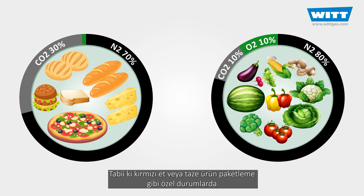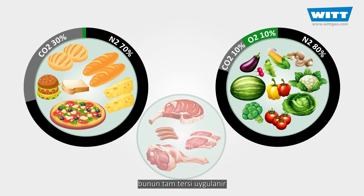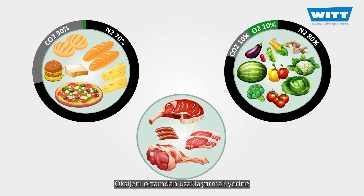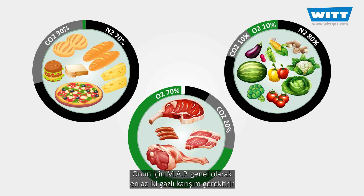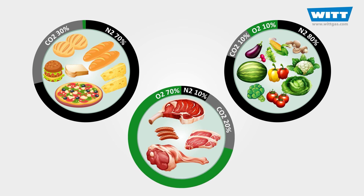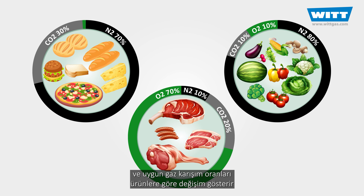Of course in special cases, such as packing red meat and fresh produce, the opposite is correct. We do not eliminate the oxygen but instead increase its concentration to prevent anaerobic growth. MAP therefore normally requires a mixture of at least two gases, and the optimum proportions vary from product to product.